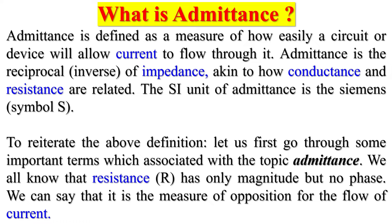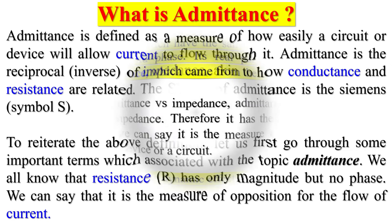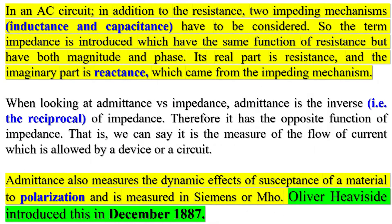Resistance R has only magnitude but no phase — it is the measure of opposition for the flow of current. In an AC circuit, in addition to resistance, two impeding mechanisms — inductance and capacitance — have to be considered. The term impedance is introduced, which has the same function as resistance but has both magnitude and phase. Its real part is resistance, and the imaginary part is reactance, which comes from the impeding mechanism.